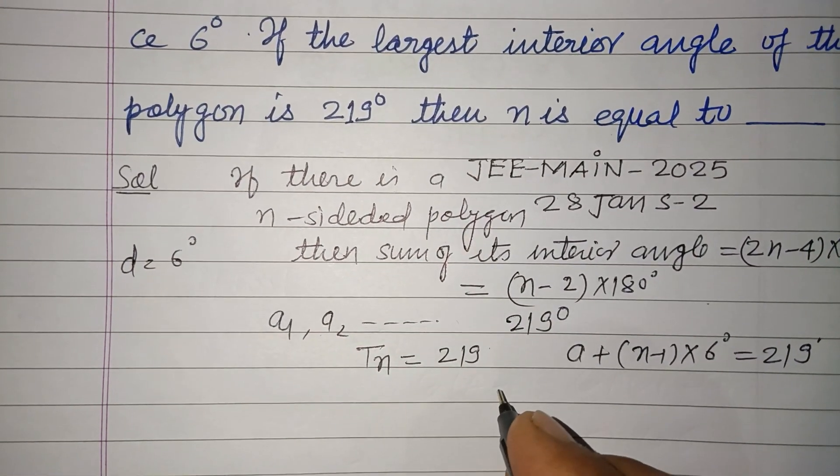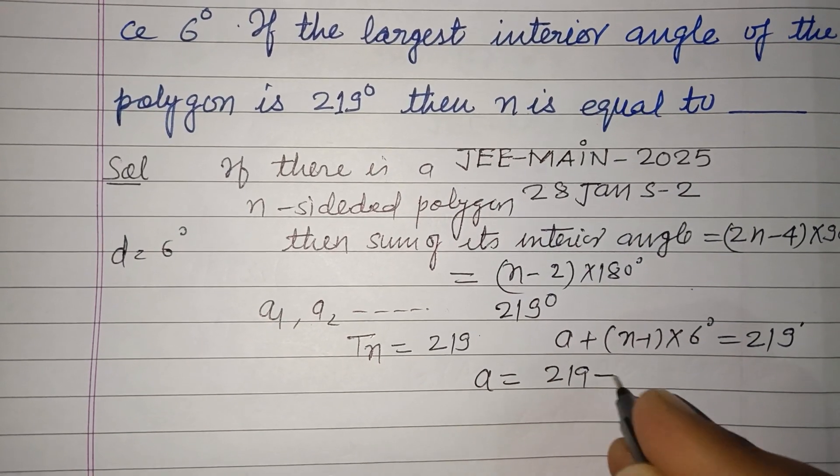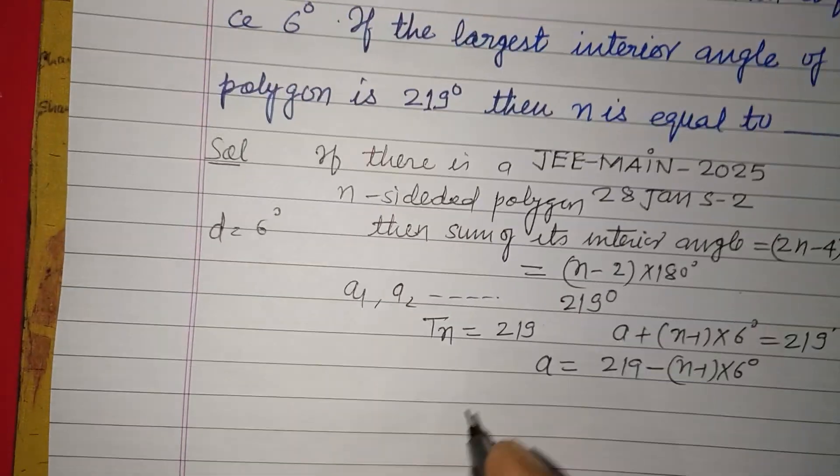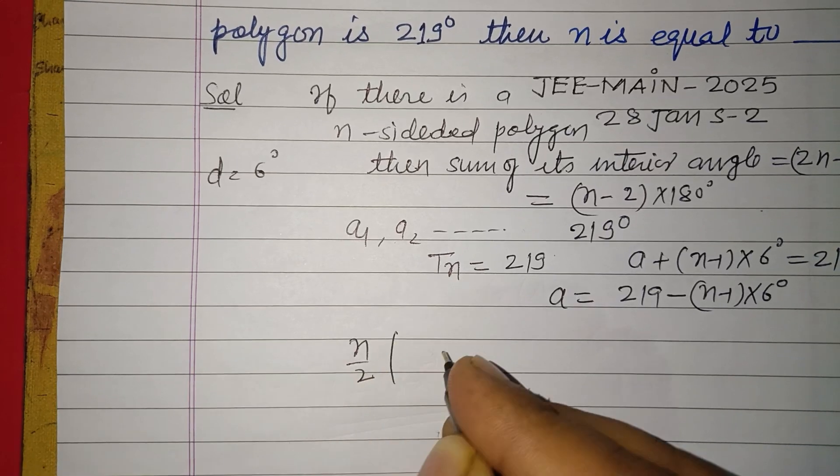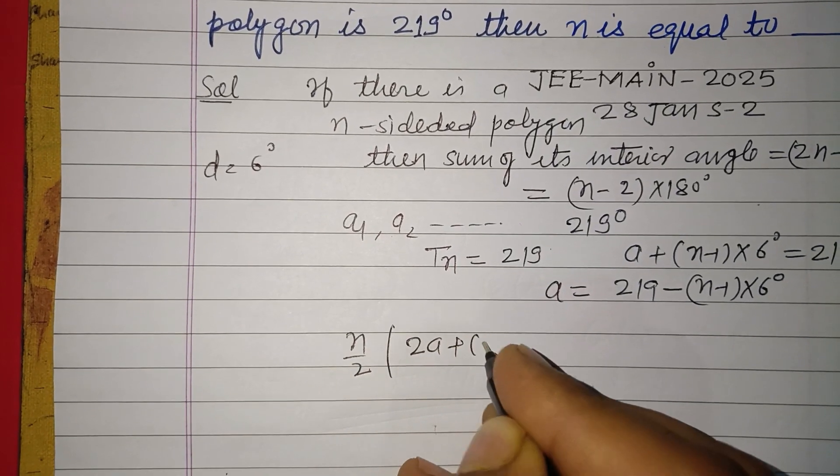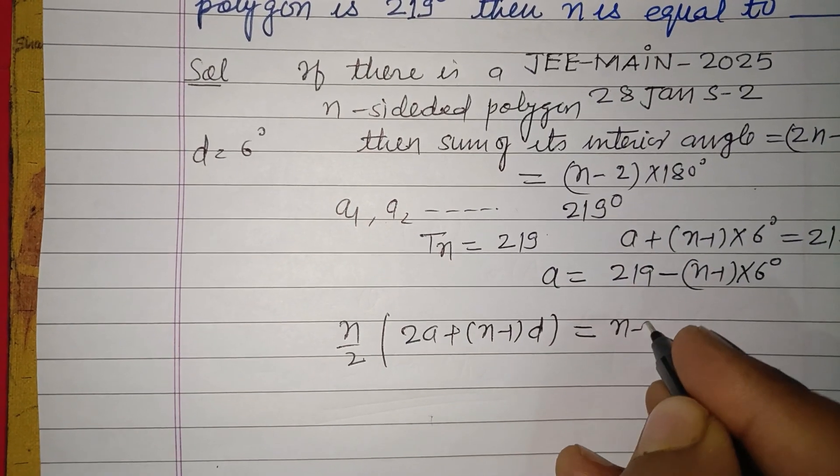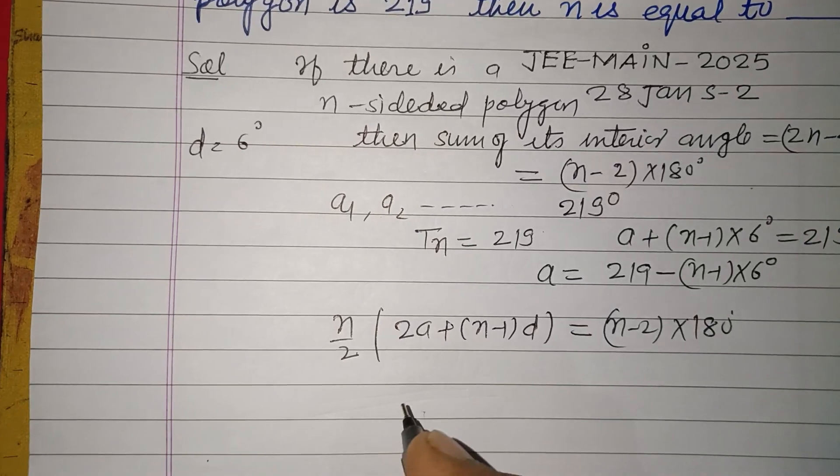From here we can get a equals 219 minus n minus 1 into 6. And the sum of angles is n by 2 times 2a plus n minus 1 into d equals n minus 2 into 180.